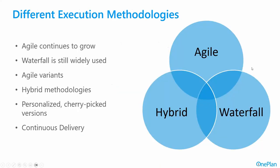But the needs of the modern organization go way beyond this. There are a bunch of different execution methodology variations that people are using. Agile continues to grow as we try to be more responsive, but waterfall is still widely used in certain types of projects. There are different variants of agile, hybrid methodologies combining both agile and waterfall. And people tend to cherry-pick aspects of certain versions they want to use. With product development, continuous delivery is the rule of the day. This adds complexity where the traditional PPM waterfall-only approach has to move on.